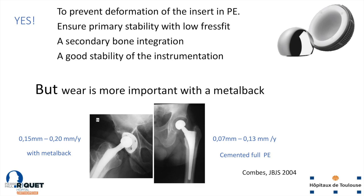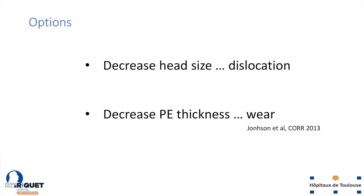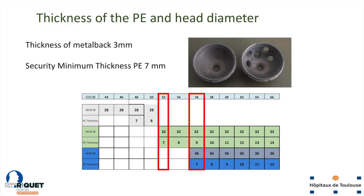We've used a lot of the RM from Methis and were very happy, because it allows bone integration, and wear has been shown to be related to the presence of a metal back — published in JBJS 2004. So we have two options: either we increase head size and have the risk of dislocation, or we decrease PE thickness and have the risk of wear. The reason we're obsessed with this is because some patients, especially women, may have very small acetabuli.